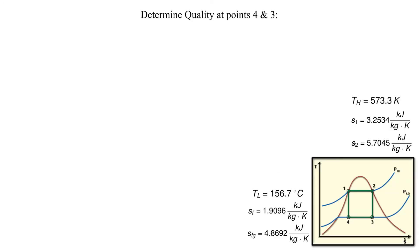It is clear from the TS diagram that the entropy at point 1, which is known, is the same as the entropy at point 4. Using the equation for the entropy of a saturated mixture, we can solve for the quality at point 4. The quality at point 4 is 0.2760.